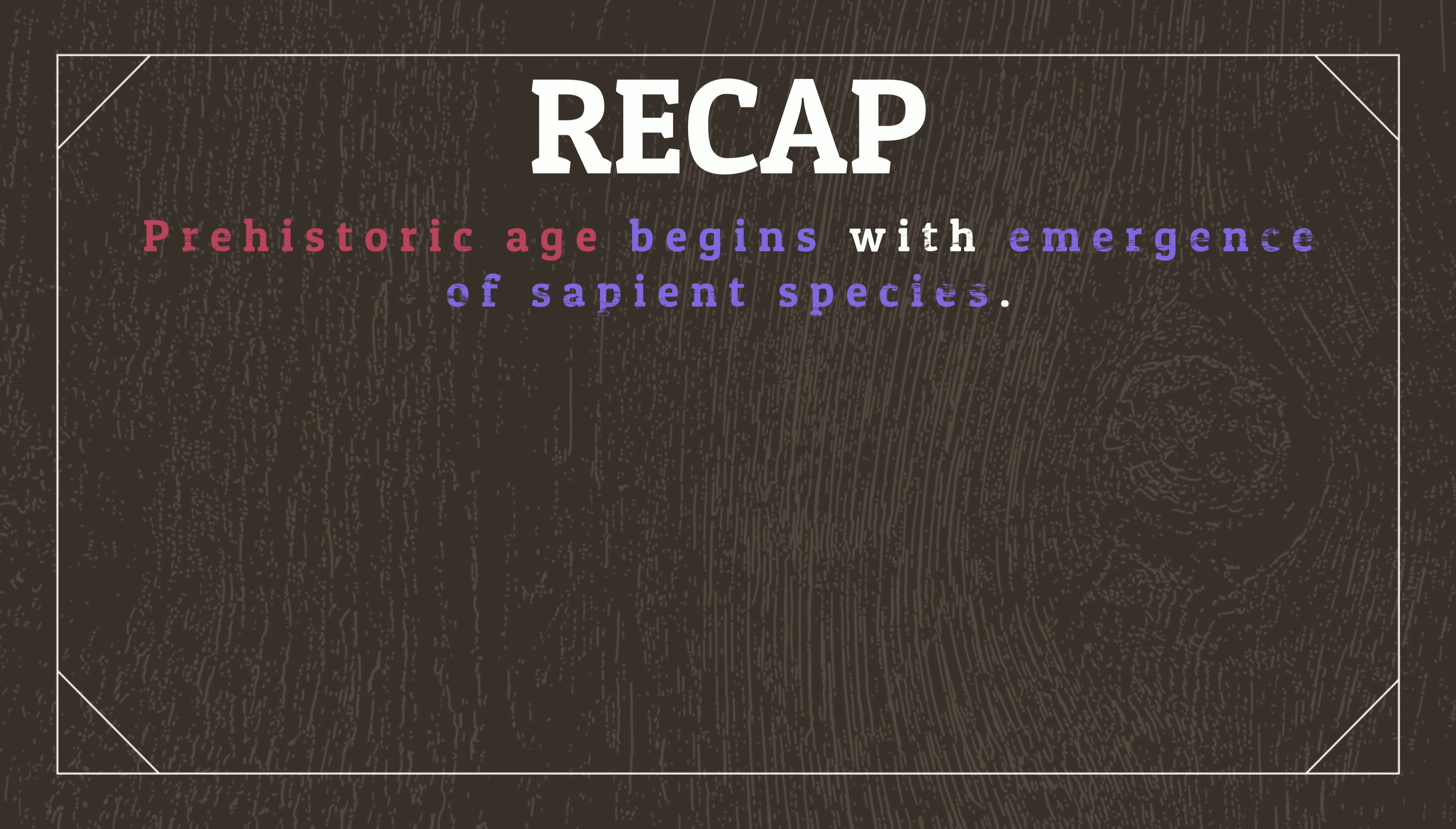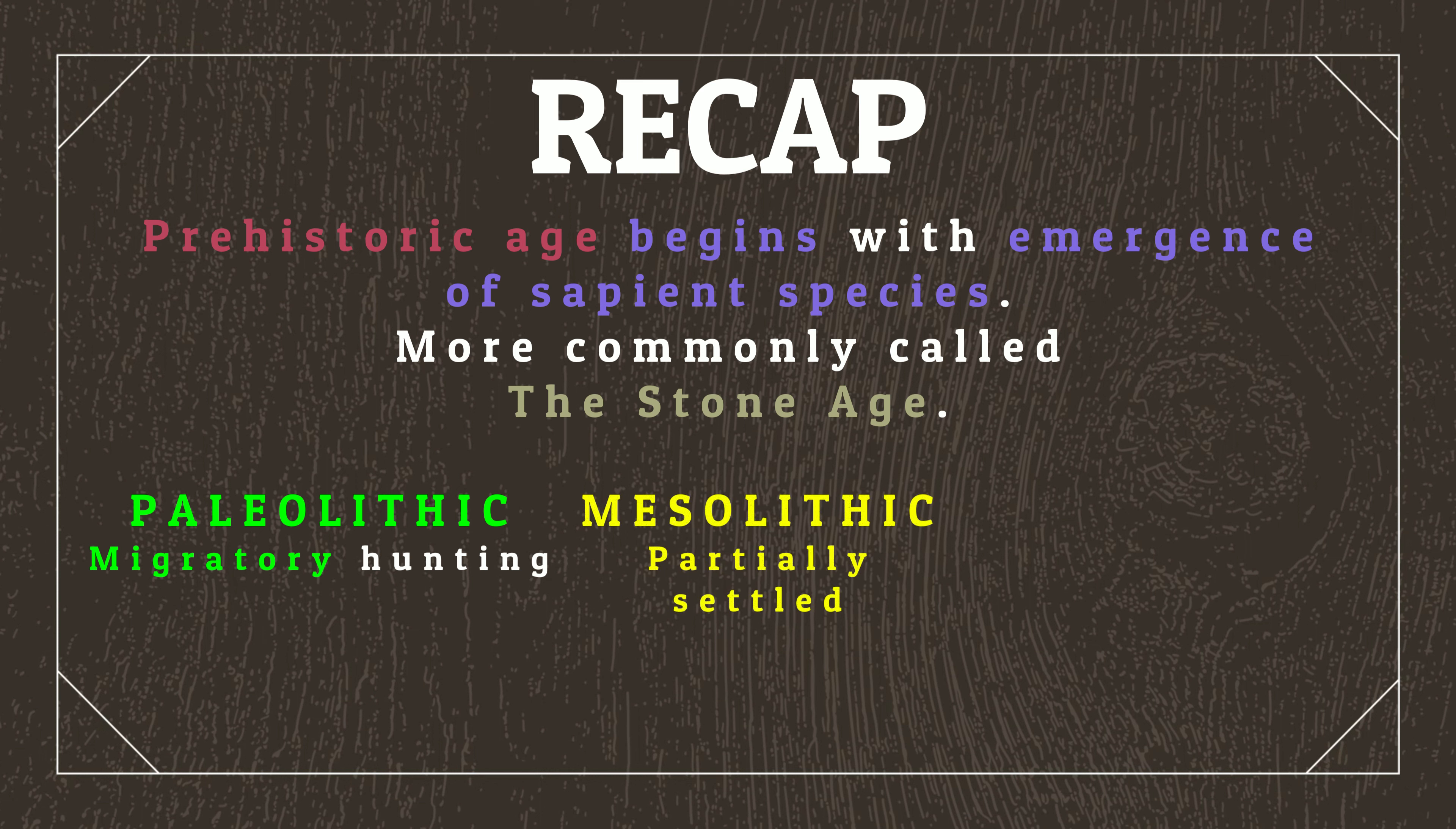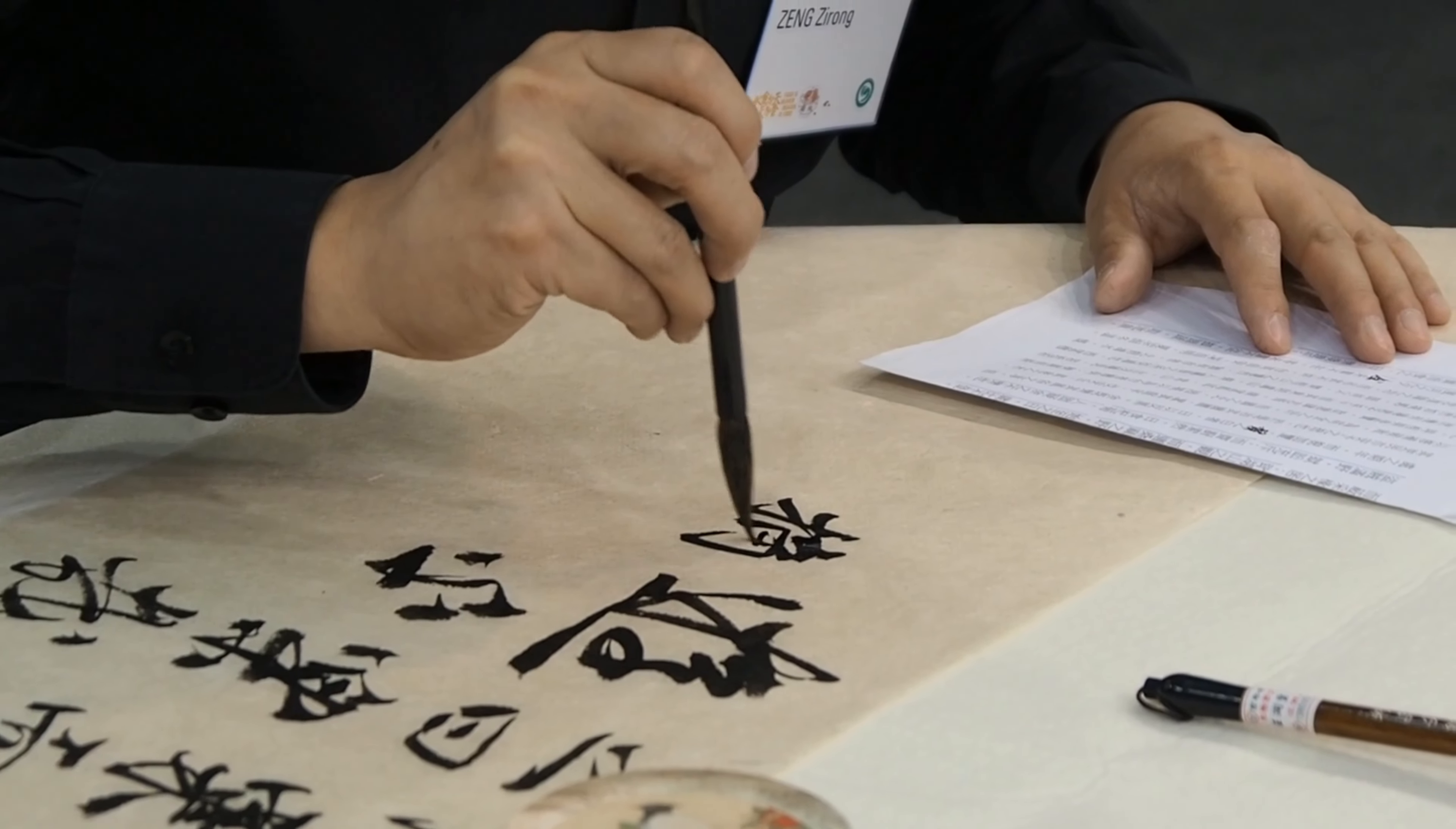So, to recap, the prehistoric age begins with the emergence of sapient species. For Earth-like planets with human-like species, this period is more commonly called the Stone Age, which is mostly dominated by the Paleolithic era, where sapient species have migratory hunting lifestyles, followed by the Mesolithic transitionary era, where species begin to settle, and finally the Neolithic, which is when species have properly settled, agriculture develops, and the first records emerge, which concludes the prehistoric age. Join me next time when we'll look at writing, the critical development that has pulled our sapient species out of the prehistoric era.